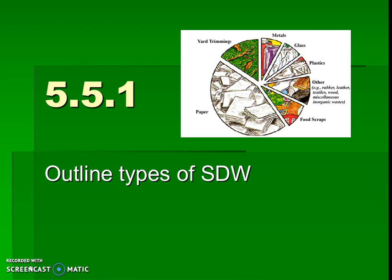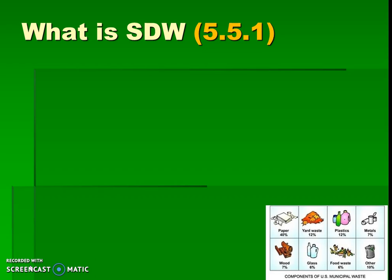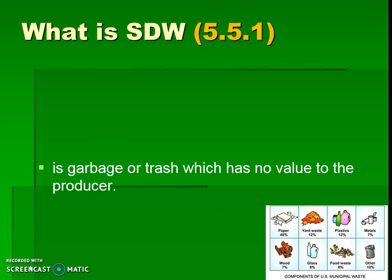There are lots of different categories of solid domestic waste that we have to outline, and you can jump back and forth in this video to get these different categories. I highly recommend using online resources for any research projects, to get the most up-to-date statistics on the amounts and types of waste. So what is solid domestic waste in general? It is garbage or trash which no longer has value to the producer — though that doesn't mean it couldn't have value to somebody else.